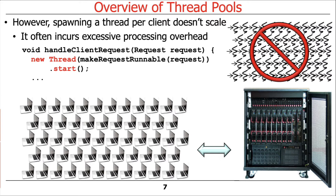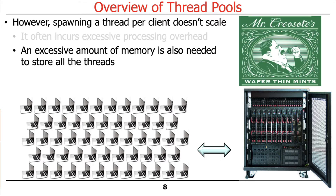Here's an example of a program that creates a thread for every request — every request comes in, we start a new thread to handle it, and we end up with a huge number of threads. Chances are that will cause your machine to come to a screeching halt, because there's an excessive amount of memory needed to store all those threads, and managing them takes a lot of time.